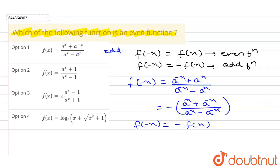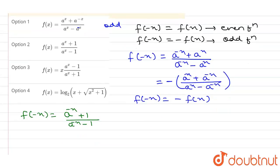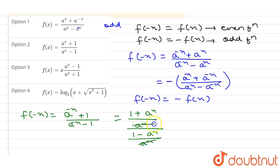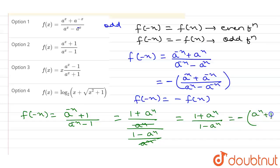Similarly, for the second option, if I put f(−x), I get (a⁻ˣ + 1) / (a⁻ˣ − 1). Simplifying by multiplying numerator and denominator by aˣ, this becomes (1 + aˣ) / (1 − aˣ). Taking minus as common gives −(aˣ + 1) / (aˣ − 1), which equals −f(x). So this is also an odd function.